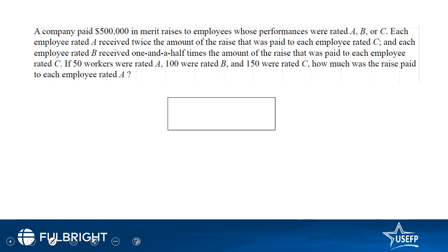Next question: a company paid $500,000 in merit raises to employees whose performance were rated A, B, or C. Each employee rated A received twice the raise paid to each employee rated C, and each employee rated B received one and a half times the raise paid to each employee rated C. If 50 workers were rated A, 100 were B, and 150 were C, how much was the raise paid to each employee rated A?